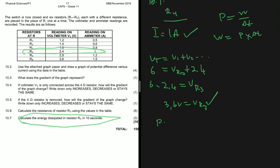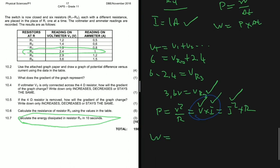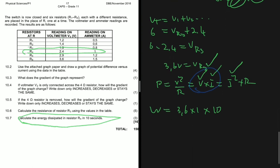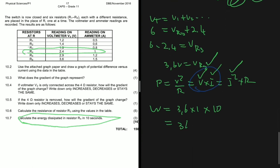We know that power P equals V squared divided by R, or V multiplied by I, or I squared multiplied by R. We have the current and the voltage, so we use P equals V multiplied by I. The energy equals V multiplied by I multiplied by time: 3.6 multiplied by 1 multiplied by 10 seconds equals 36. The SI unit of energy is Joules, so the energy dissipated in R3 over 10 seconds is 36 Joules.